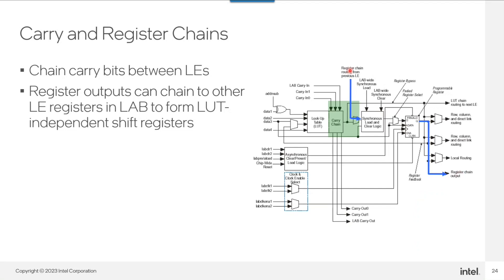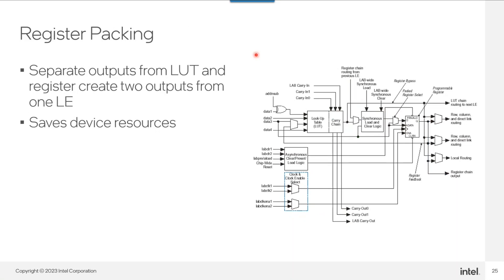Continuing on carry and register chains: if you're performing a more complex function, carry-in from a previous LE feeds directly into the register without going through the lookup chain. There's also register packing — you can have separate functions between the lookup table and the register, packing two separate functions into a single logic element: one purely combinatorial and one purely synchronous. Separate inputs and outputs allow for this, and the tools automatically perform register packing to save resources.